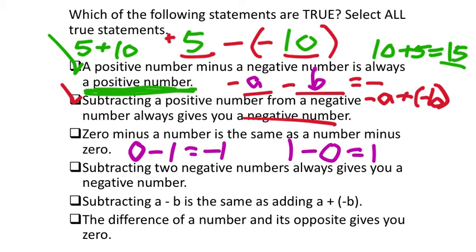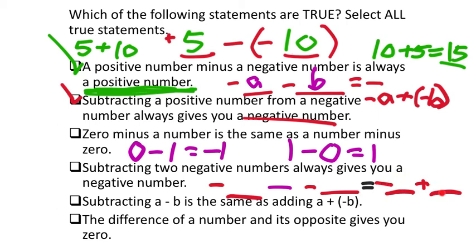Statement 4: subtracting two negative numbers always gives you a negative number. We've got negative A minus negative B. Using keep change change, this becomes negative A plus positive B. Will that always be negative? No, it won't always be negative. If the first negative value is bigger than the second, then you'd get a negative. But if the second number is bigger than the first, the positives only cancel out so many of the negatives and you'd end up with a positive answer. So this one is false.